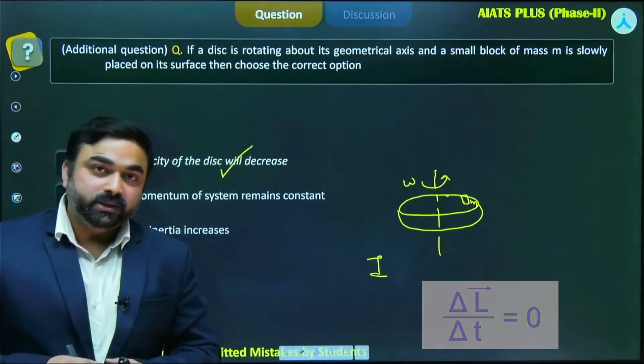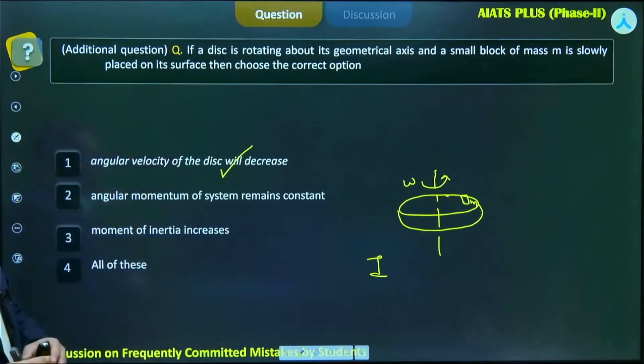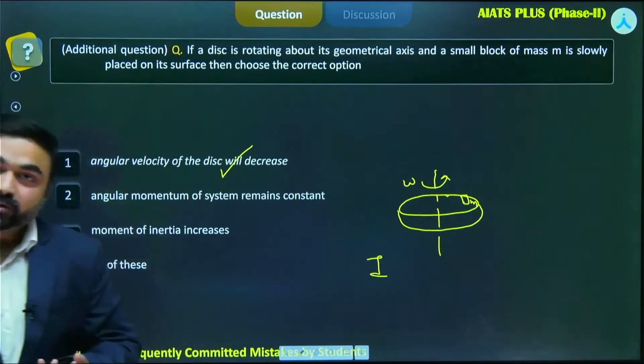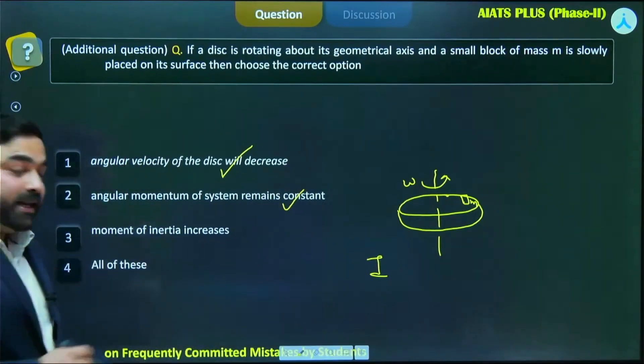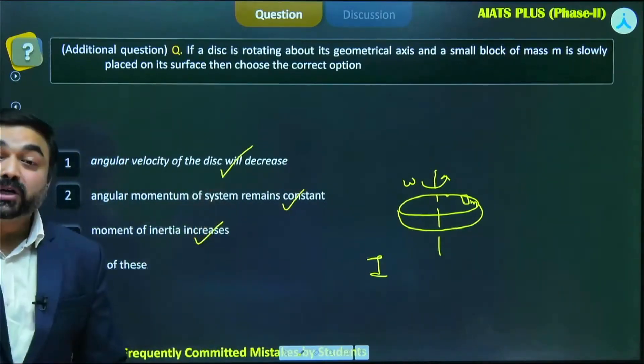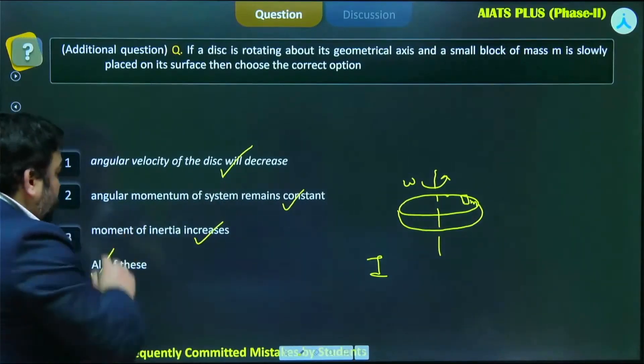Option two says angular momentum of the system remains constant. I just told you, this is definitely correct. And moment of inertia increases, so this is also correct. The correct choice of answer here will be all of these.